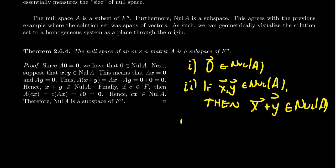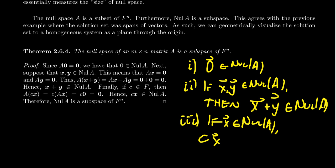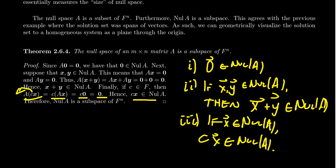The third condition: if X belongs to the null space, then for any scalar C, CX must also belong to the null space. Using the assumption that AX equals zero, consider A times CX. We can factor the scalar out to get C times AX, but AX equals zero and any scalar multiple of zero is again zero. So CX is in the null space. Checking all three conditions, we've determined that the null space is in fact a subspace of F^N.